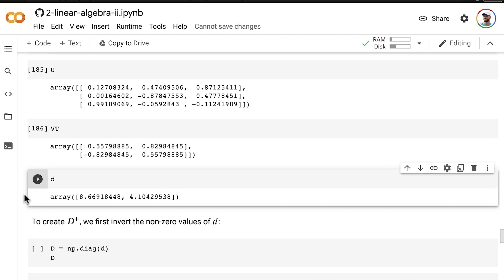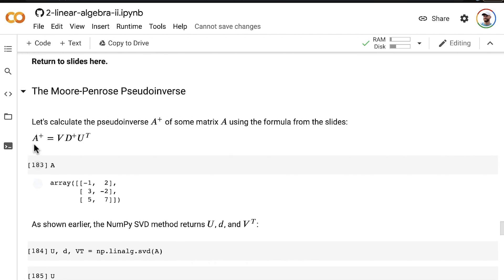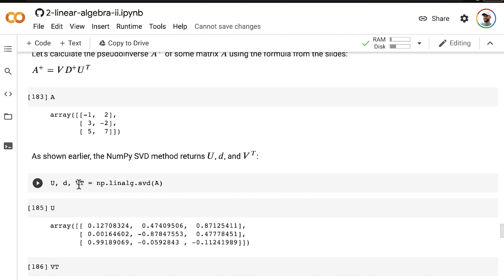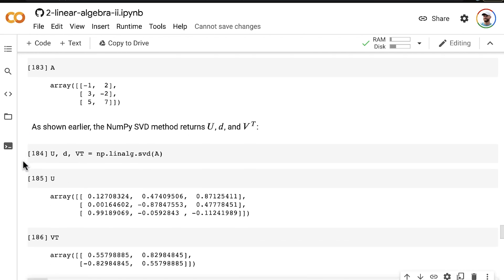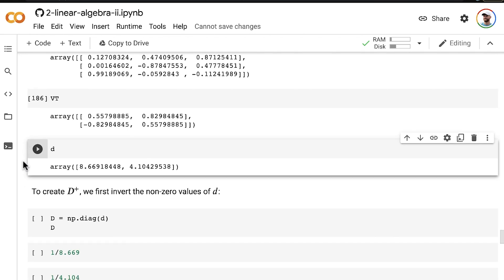In order to create A plus, our pseudo-inverse of A, we're going to need to transpose U. That's super easy. We're also actually going to need to transpose V because, by default, it comes as V transpose out of the NumPy SVD method. But transposition is trivial, so that's no problem. What about calculating D plus? Well, that's going to be a little more interesting. I talked about it on the slides, but let's dig into it in more detail now.